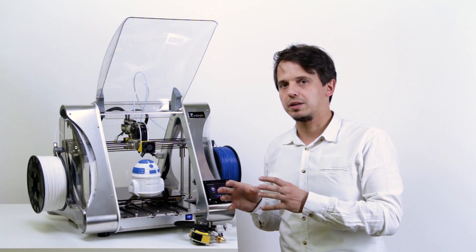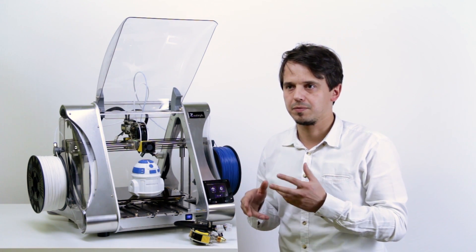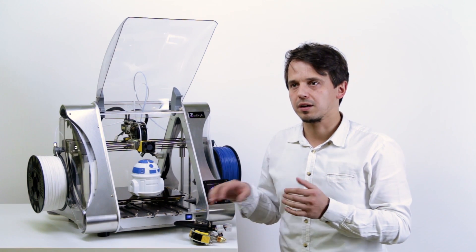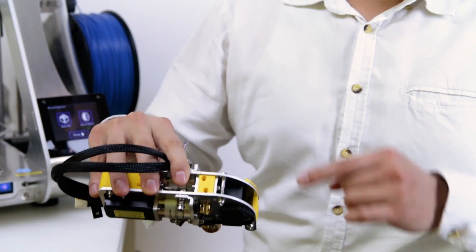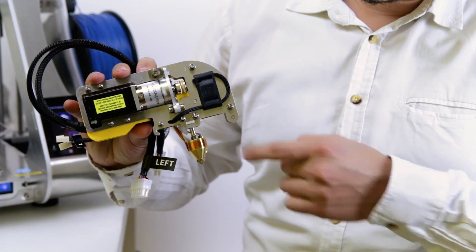The difference between this tool head and traditional dual head extruder is that there's only one nozzle. So there are two materials fed in, but there's only one nozzle that feeds the material out.